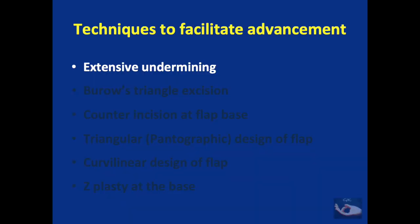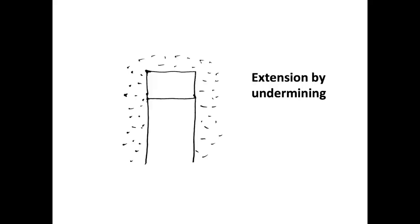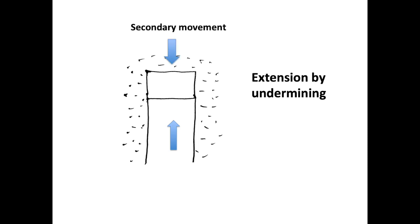The first technique that should be done is extensive undermining. This procedure must be done for all flaps, and the undermining is done around the defect and around the area of the flap to make use of the laxity of the tissues. The flap has a primary movement towards the edges of the defect and the edges have a secondary movement toward the flap.